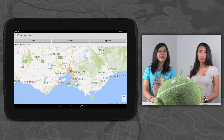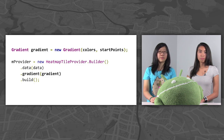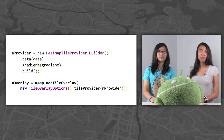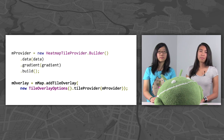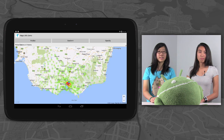The gradient class uses these and interpolates between them to generate the colors used in the heat map. You can create a heat map with your own custom gradient by providing it to the builder as shown. Use this provider to add a new tile overlay to your map. This is all you need to add a basic heat map to a map. You can change options such as radius, opacity, and gradient both at and after creation.